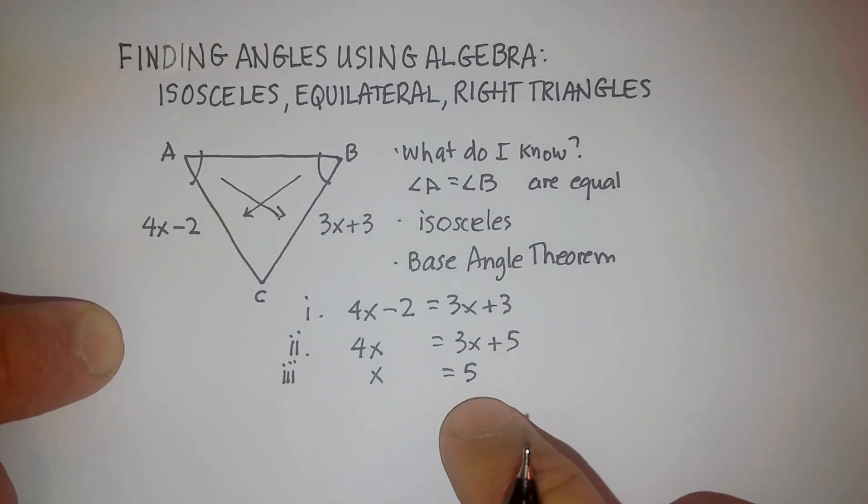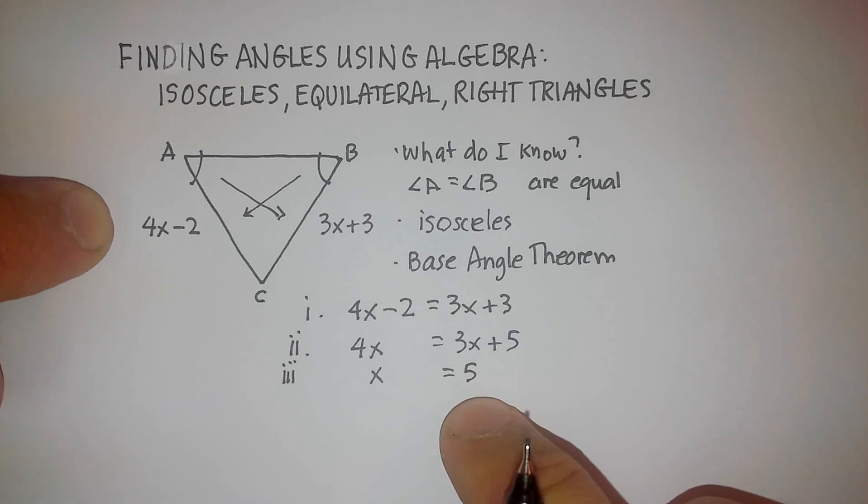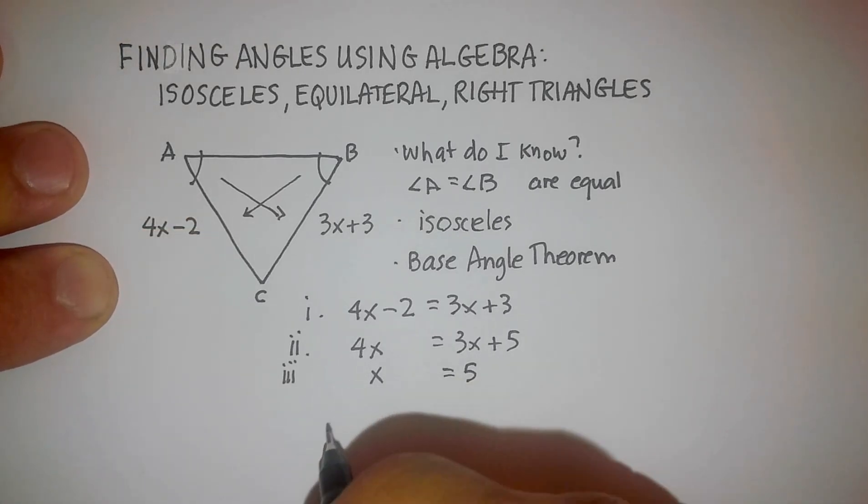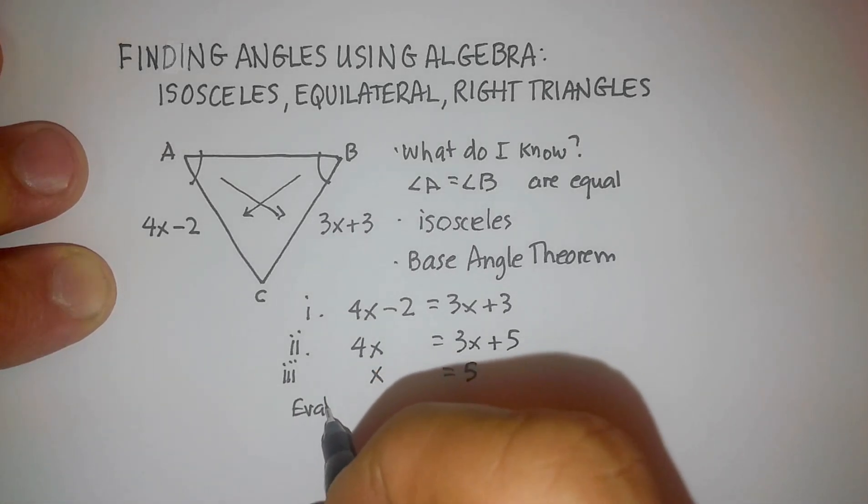So once I've got x equal to 5, I'm going to plug this back in to the individual phrases on either side of this triangle and figure out what this side length is. So now I've got, let's go ahead and evaluate, that's called evaluating.